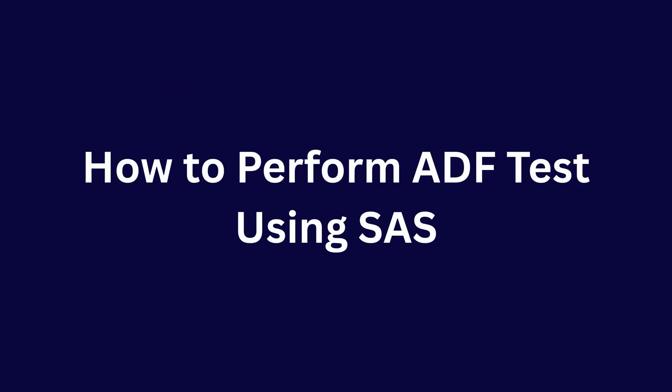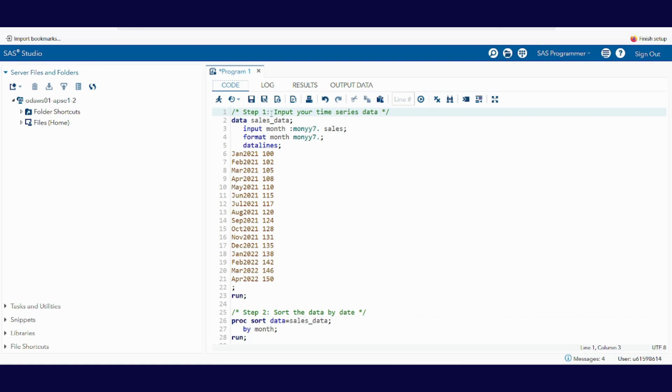Let's see how to perform ADF test using SAS. First, we have to input our time series data. This is our first step: data sales_data, labeling our dataset. I label my dataset as sales_data. Then we have to put our variables like this, and then these are the data lines. In data lines, the first column is month and year, and the second column is sales value. Then run.